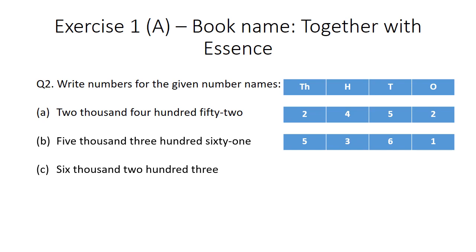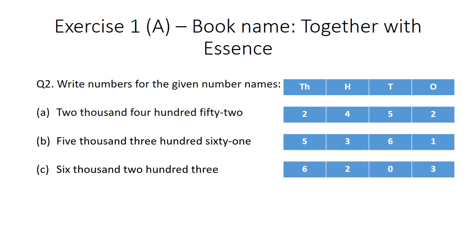Part C: we will write 6 at the thousands place, 2 at the hundreds place. At the tens place, no digit is given, so we will write 0 there, and at the ones place we will write 3.